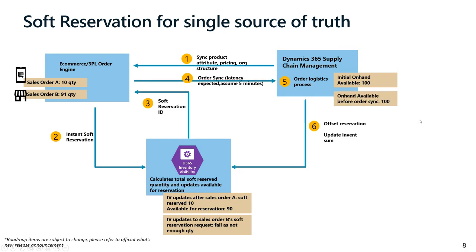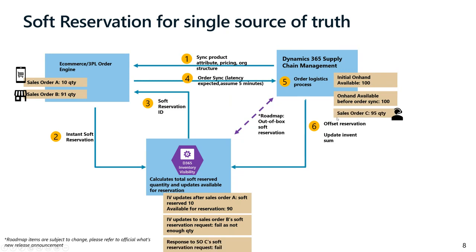What we are currently working on is building an out-of-box soft reservation trigger from Dynamics 365 Supply Chain Management sales orders, so you don't have to customize or build your own route to make this work. This is targeting customers who are directly creating sales orders in Dynamics 365 Supply Chain Management. For example, if you have a call center as another channel, call center workers may directly create orders in D365 SCM. In this case, you also want to refer to Inventory Visibility Service for the actual available-for-reservation information, hence doing the soft reservation.